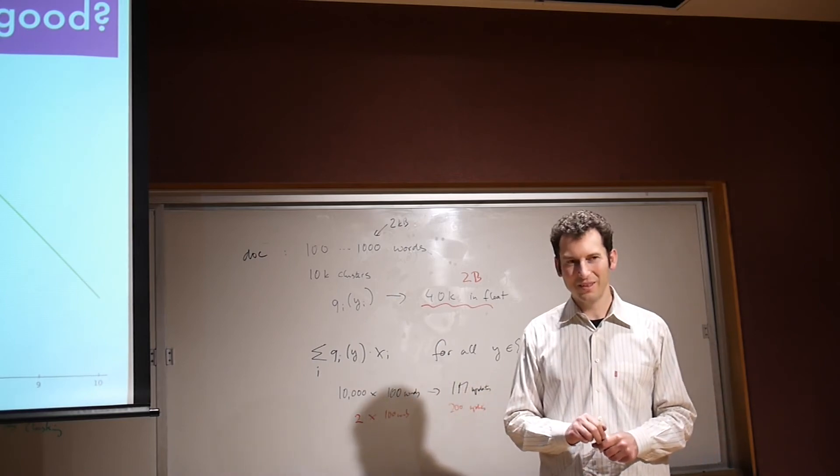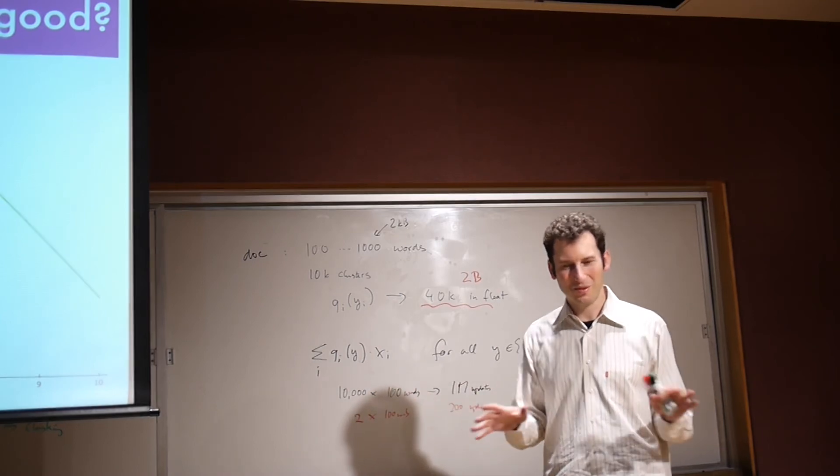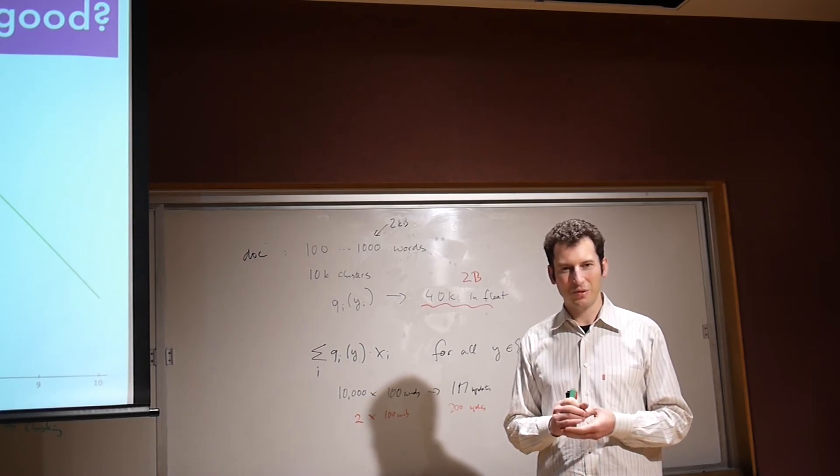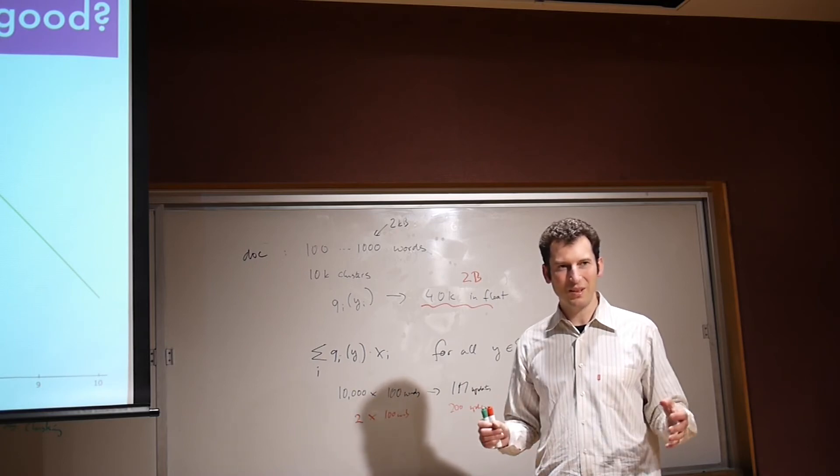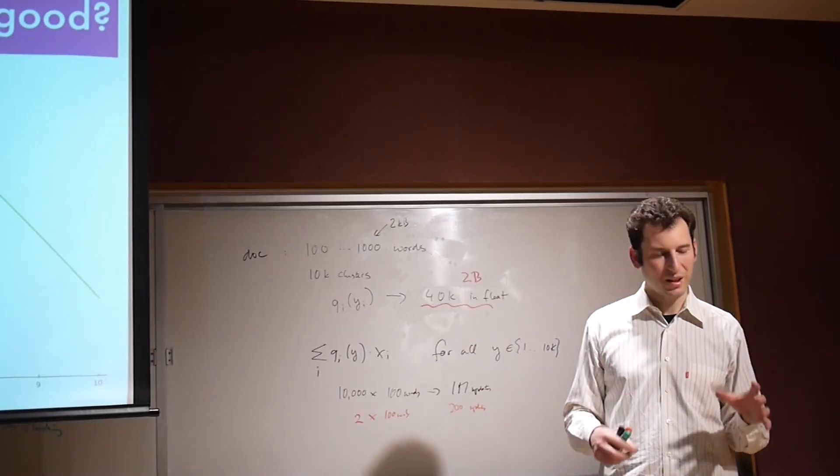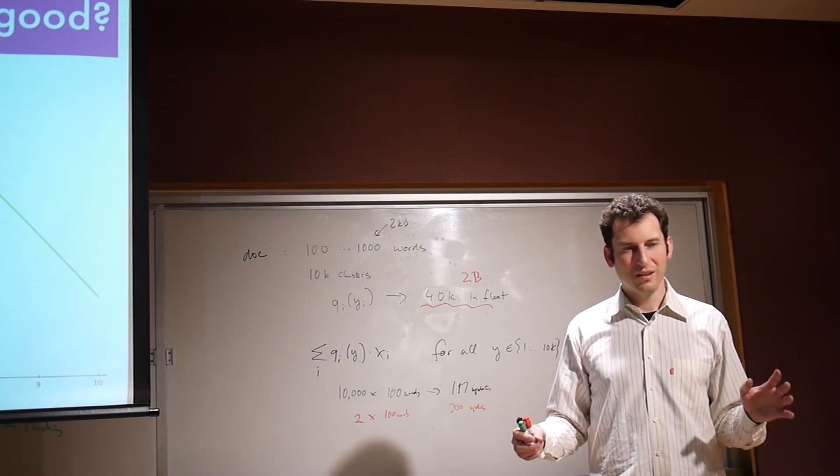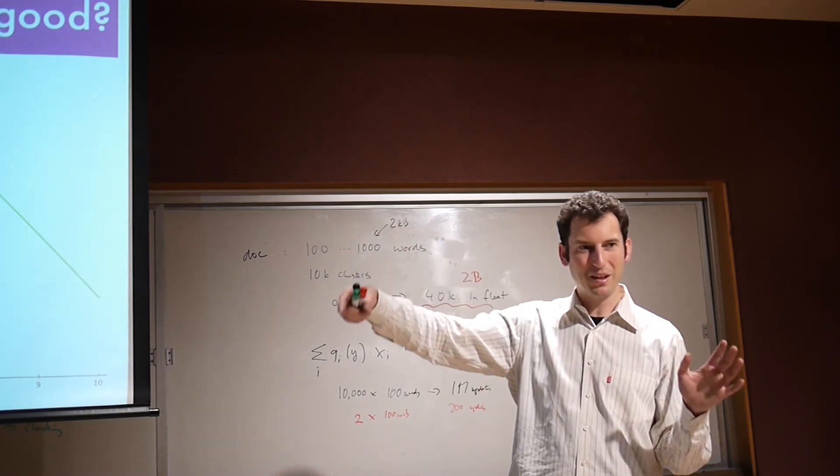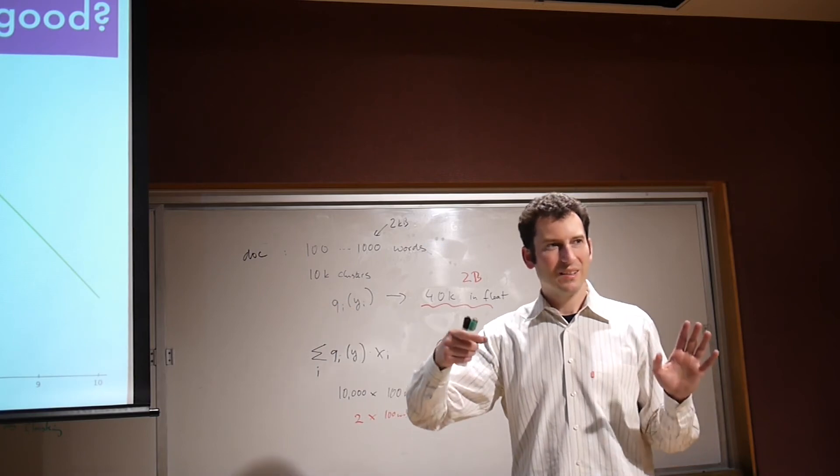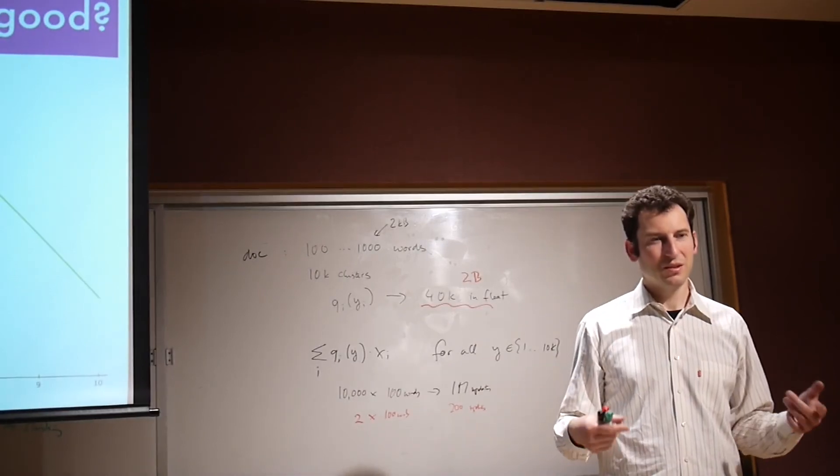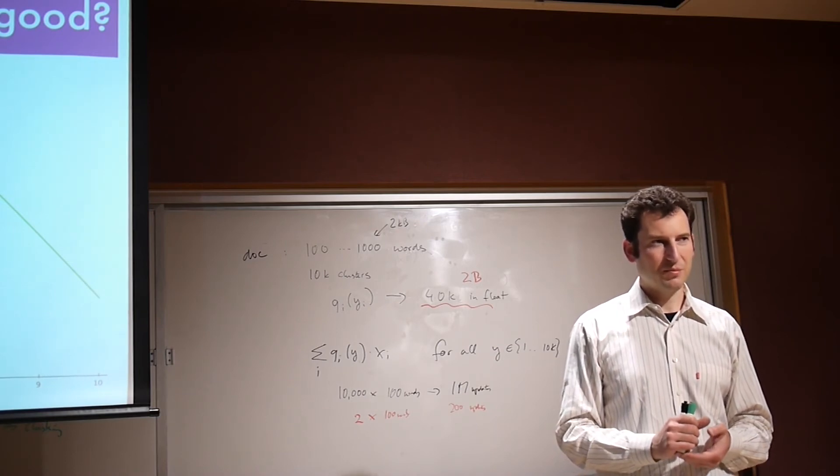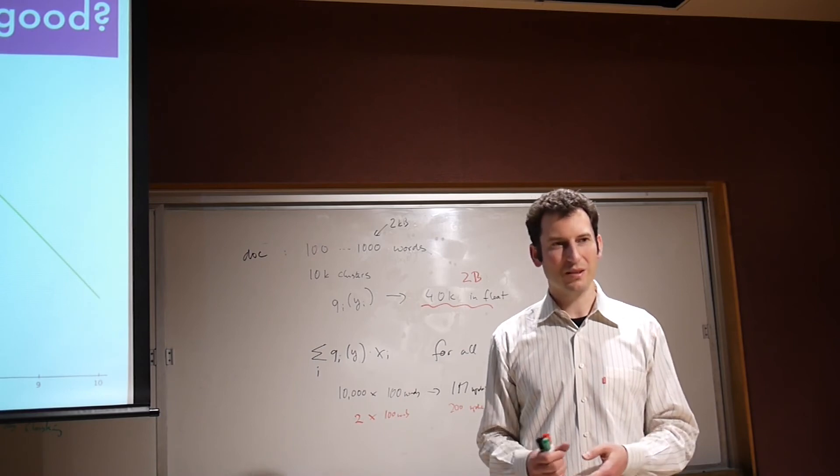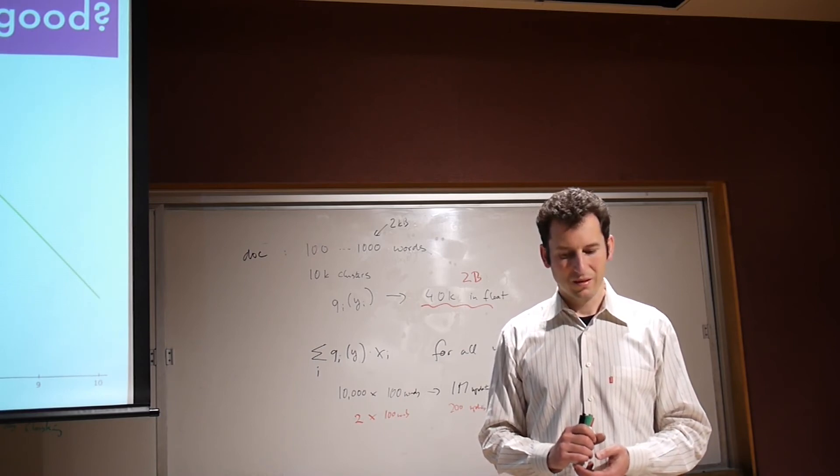The update here is going to be 2 times 100 words. Why twice? Because I need to down-date the previous class and update this one if I do it incrementally. Now we are talking about 200 updates. One million versus 200. Furthermore, my network traffic, if I had one gigabyte of data, is now two gigabytes, as opposed to 10 terabytes. This is why, if you use sampling, you can actually get many orders of magnitude computational savings and push up things at scale. This runs very counter to the intuition of what you usually hear when you hear people talking about graphical models.